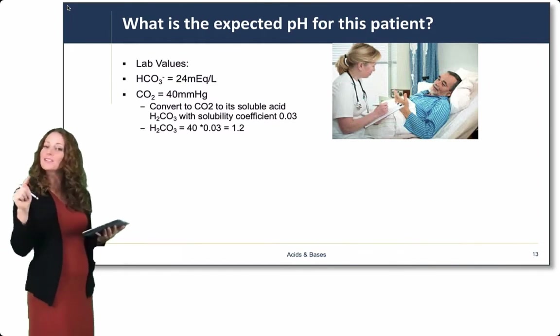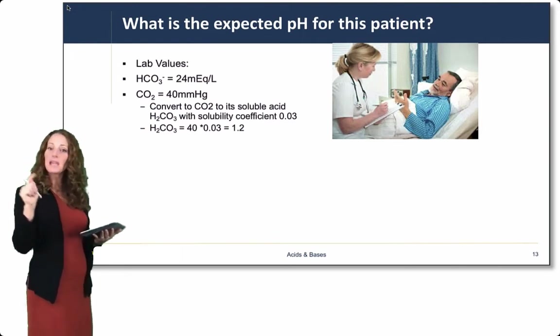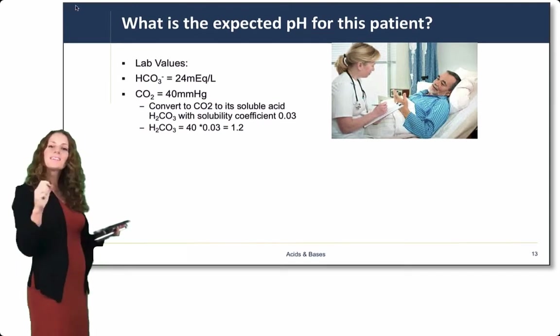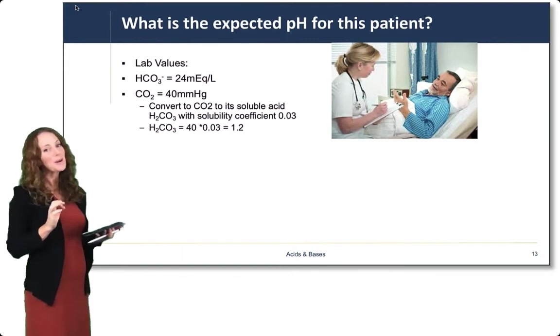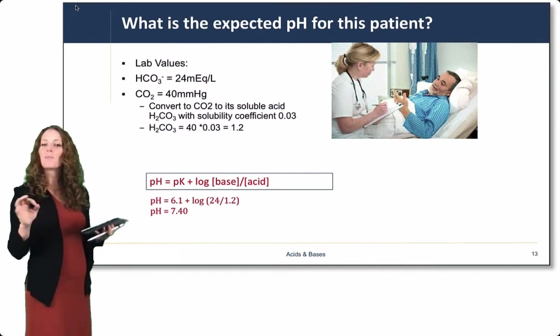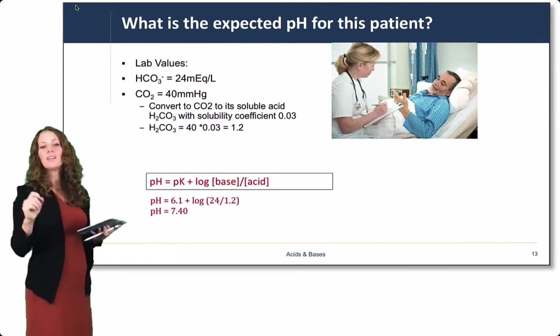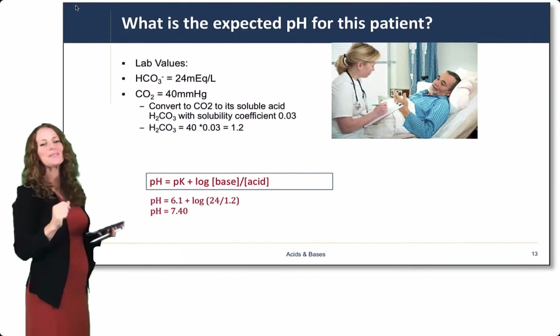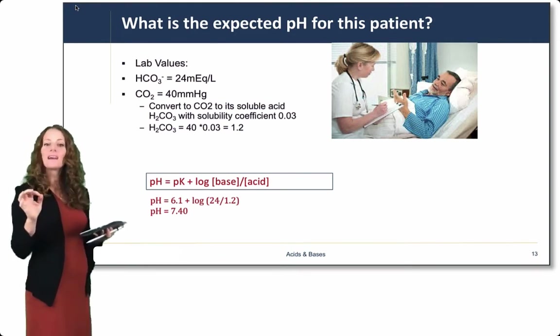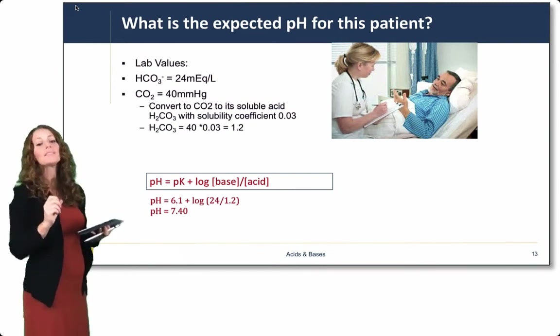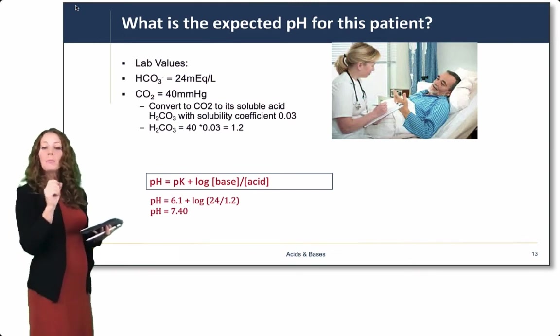So here, we're going to use the Henderson-Hasselbalch equation to get the expected pH for this patient based on his bicarbonate and CO2 levels. So plug in these numbers to the Henderson-Hasselbalch equation. What you should get is a pH of about 7.4. What were the numbers you needed to know? You needed to know the pK, which is 6.1. That you can look up, but I gave it to you a few slides ago. You also need to know the base and the acid concentration. The base is the bicarbonate level, and the acid is 0.03 times the carbon dioxide. Plug those numbers in, and you get a pH of 7.4.